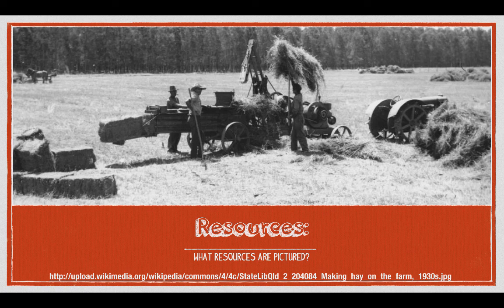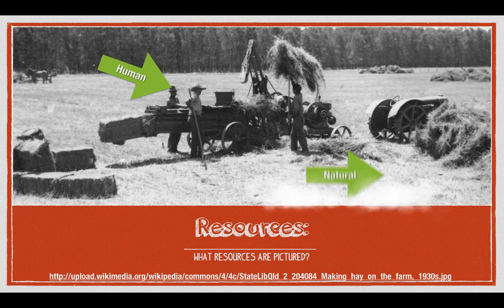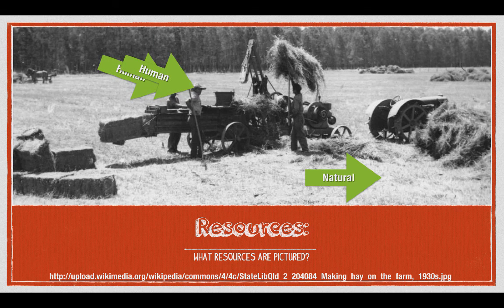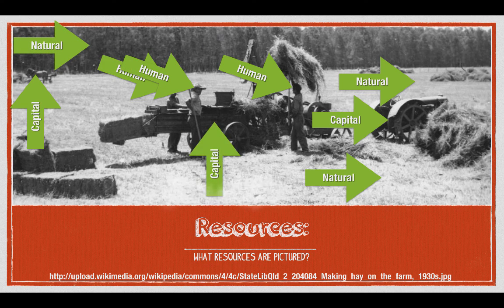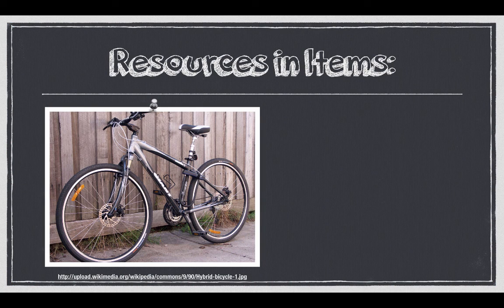Last but not least, we have a farmer making hay on a farm in the 1930s — early in the mechanical age. Let's go through the resources: human resources in the farmers; natural resource in the land; capital resources in the tractors; capital resources in the livestock in the background; natural resources in the land and the trees; and capital resources in the cart and the tools they use.